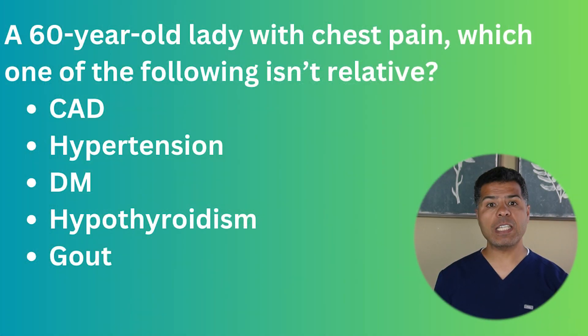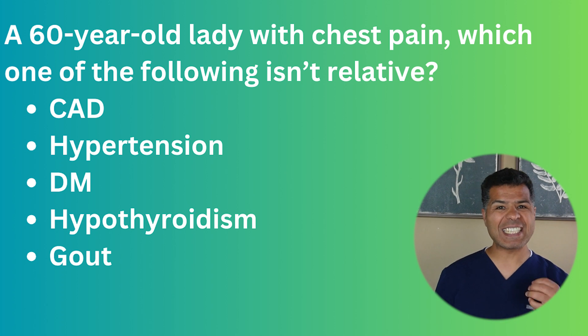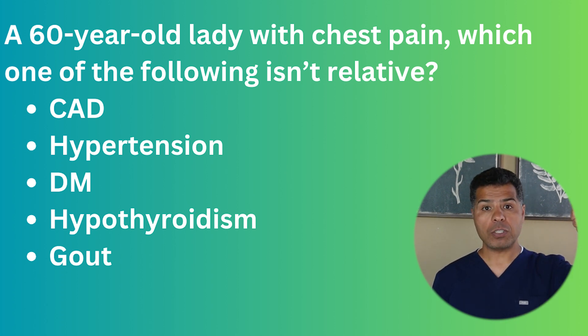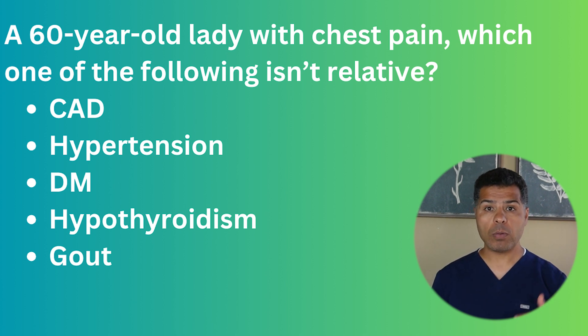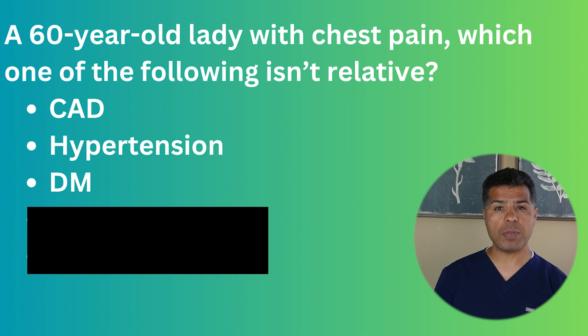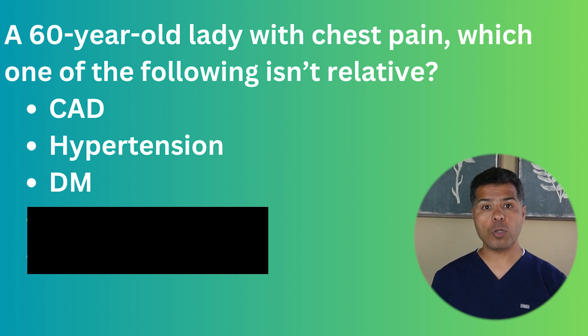Relative past medical history, surgical history, family history, and social history is the history that's directly related to the active or presenting problem. For example: a 60-year-old lady with chest pain — which of the following is not relative history? Coronary artery disease, hypertension, diabetes, hypothyroidism, or gout. As an attending physician concerned about cardiac etiology, I need to know coronary artery disease risk factors. I don't care if you skip gout and hypothyroidism, but it's paramount to mention coronary artery disease, diabetes, and hypertension.